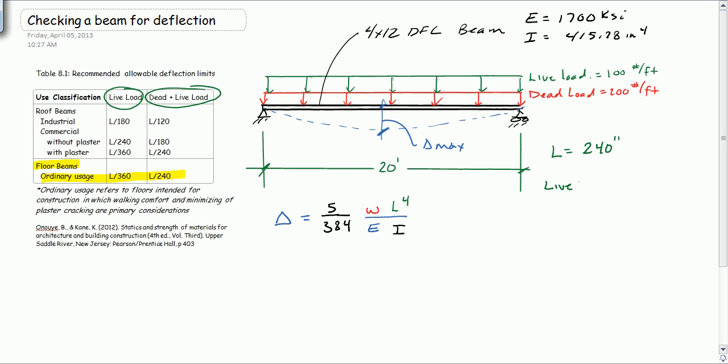So live load is 100 pounds per foot, and there's one kip has 1,000 pounds, and one foot has 12 inches. So 100 pounds per foot is equivalent to 0.00833 kips per inch.